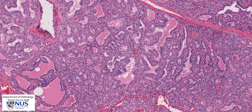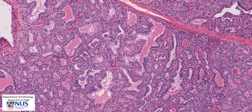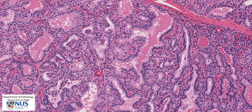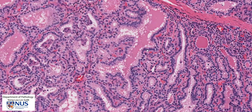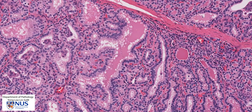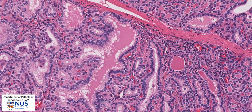Let's take a look in this area. We can see that there are some irregular follicular structures. Many of the follicles are relatively small. And if we look at the follicular cells that line the follicles, they are quite columnar.